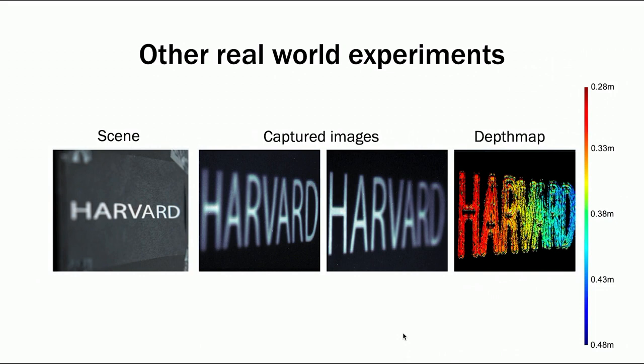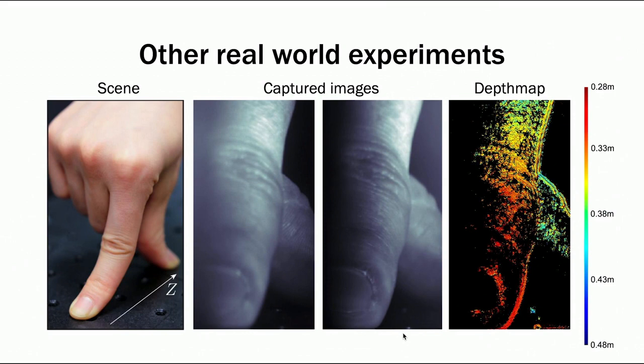Here are results of more real-world scenes. Here we show the depth map of a slanted plane. This is a depth map of fingers of my co-author Xi. It shows possibility to do hand gesture estimation using such depth sensor. Thanks for listening.